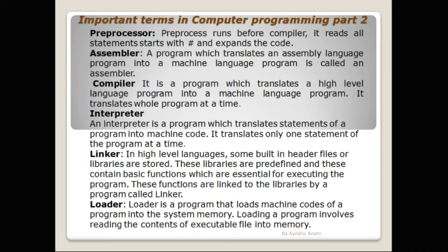Now we will move to the next terms, which are related to computer programs or software used for program execution. The first term is preprocessor. A preprocessor is a program or software that runs before the compiler. It reads all statements starting with a hash symbol and expands the code. It also removes comments in the program. It is called a preprocessor because it preprocesses the program.